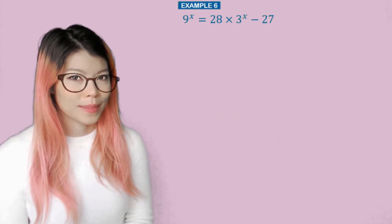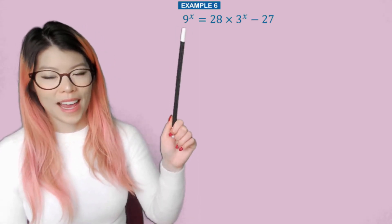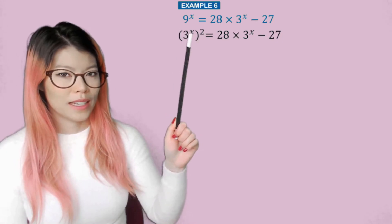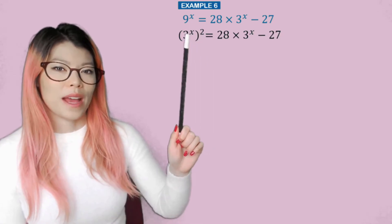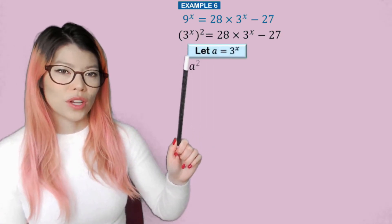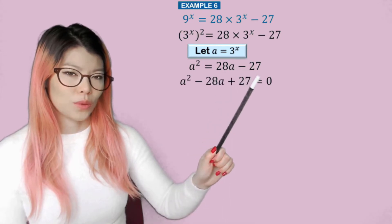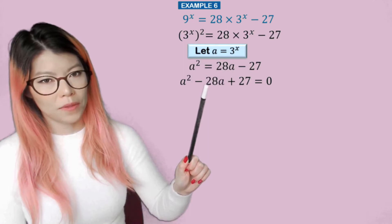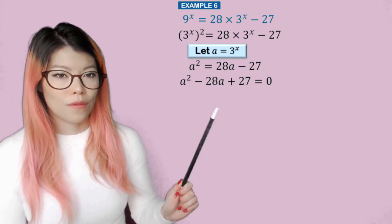Example 6. Can you see the pattern this time? So again, you can write that as (3^x)^2 because when you bring that in, that's 3 squared, which is 9 to the power of x. So now we have, again, substitute: a^2 equals 28a minus 27. Bring everything to the left. The positive becomes negative 28 and the negative 27 becomes positive 27. Now we factorize.